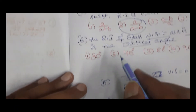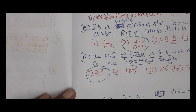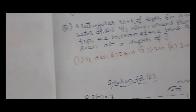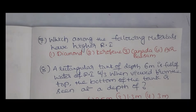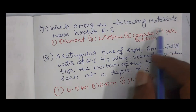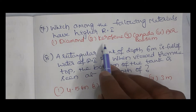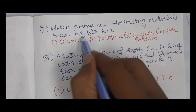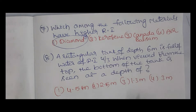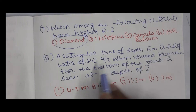The critical angle works out to 30 degrees. Next, question 7: which among the following materials has the higher refractive index? The answer is diamond, with n = 2.42.